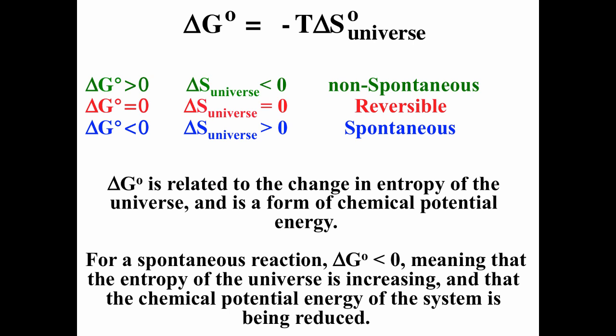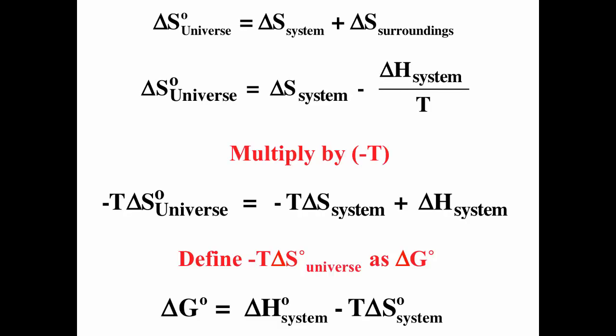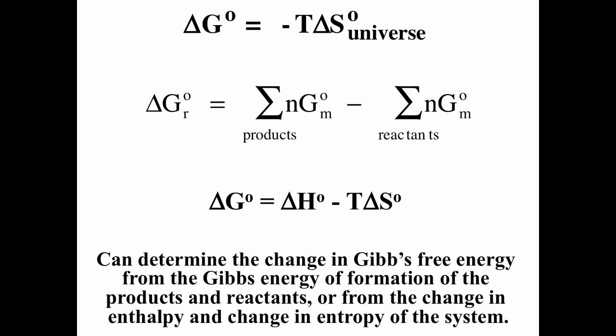If ΔG is positive, that means ΔS_universe is negative, corresponding to a non-spontaneous process. If ΔG is negative, ΔS_universe is positive, corresponding to a spontaneous process. Watch out for subscripts: ΔS_system and ΔS_universe are two different things. ΔG = −T·ΔS_universe and also ΔG = ΔH − T·ΔS_system.